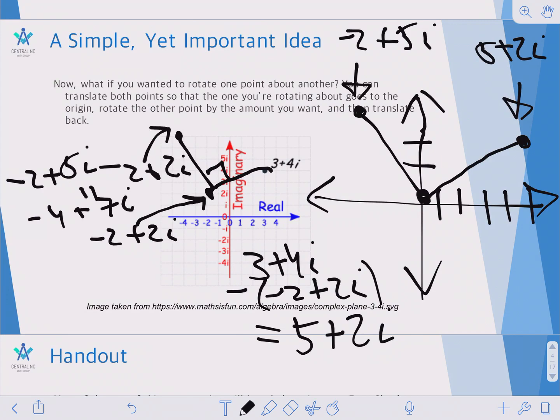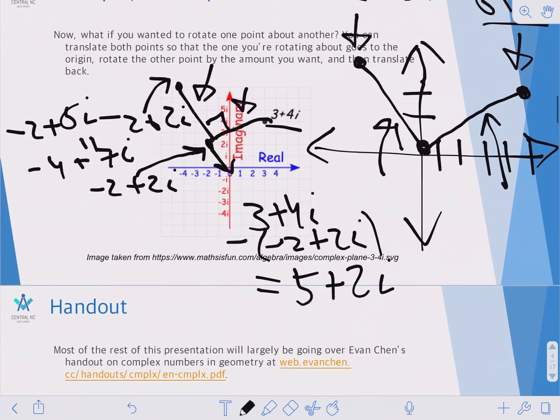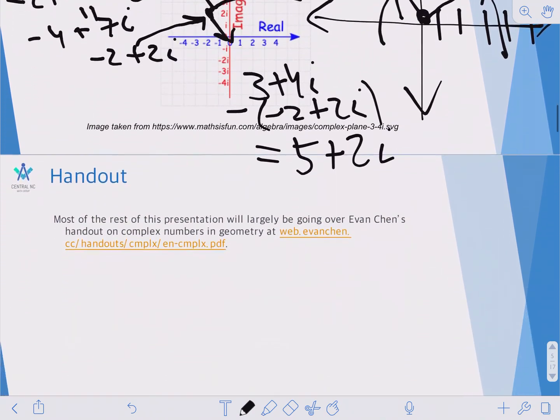The reason you subtract by minus 2 plus 2i is so that this point gets sent to the origin, and the 3 plus 4i goes to 5 plus 2i. So essentially, what you did is you took this line segment right here, and you translate it to this segment right here. And you take that segment, rotate it by 90 degrees, and then translate it back to get the segment you want.